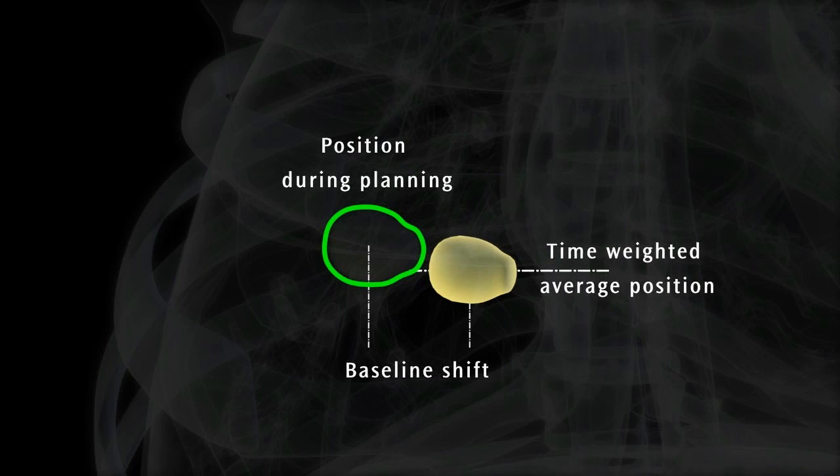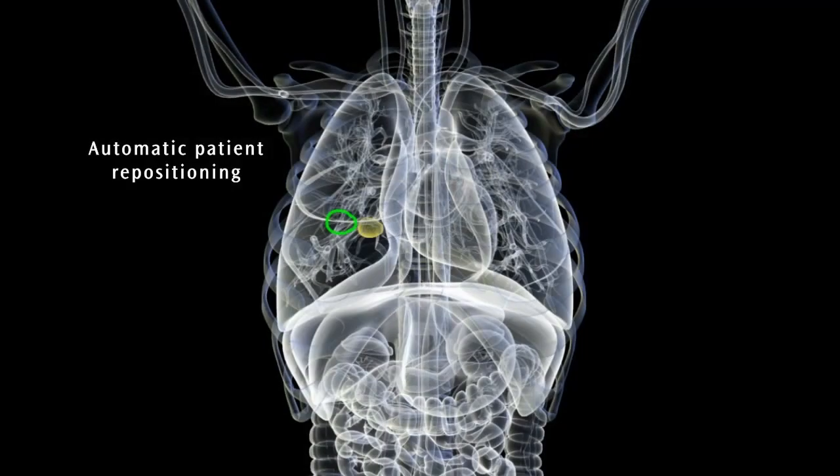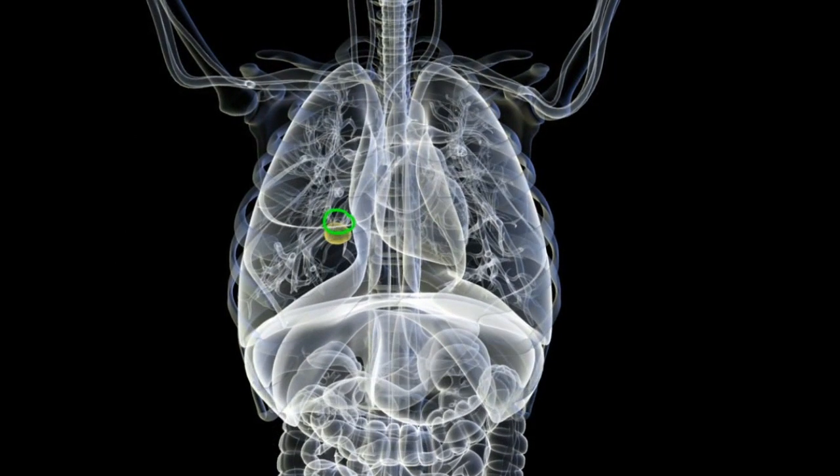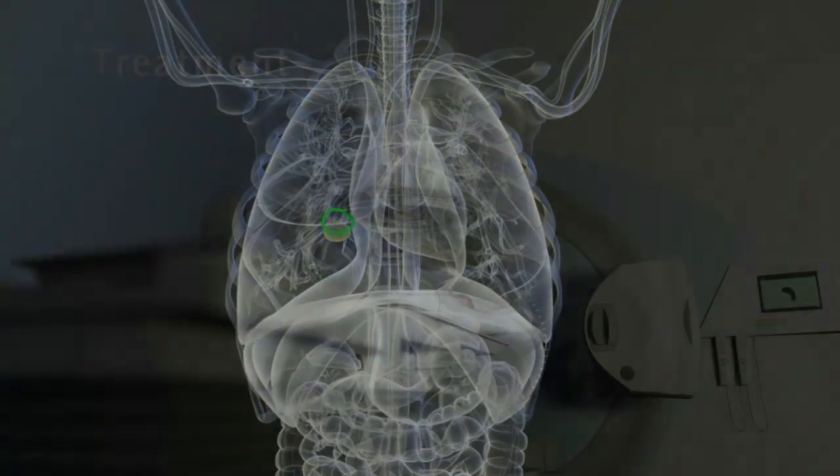Baseline shifts are corrected by moving to this position. Critical structure avoidance offers the user the ability to adjust dose placement if surrounding regions are at risk.